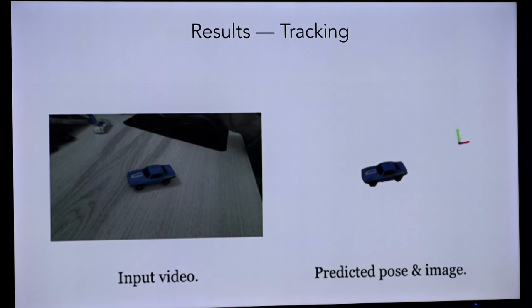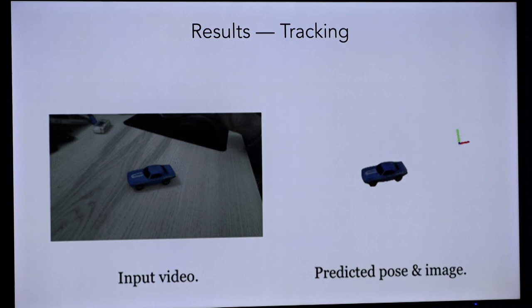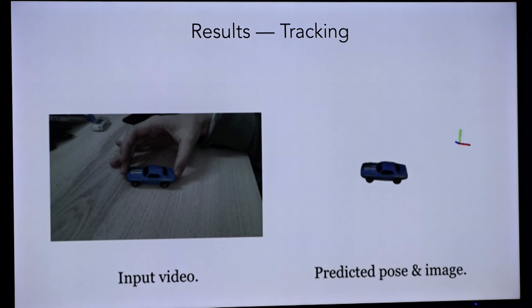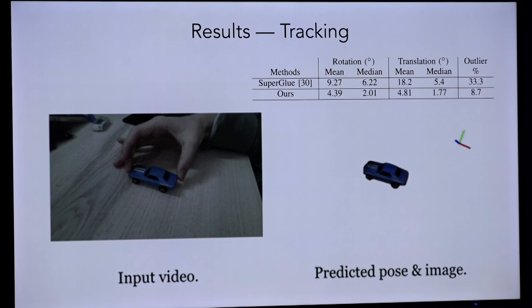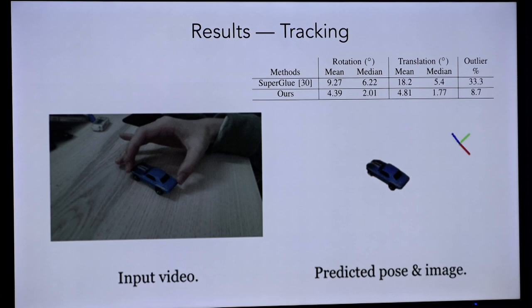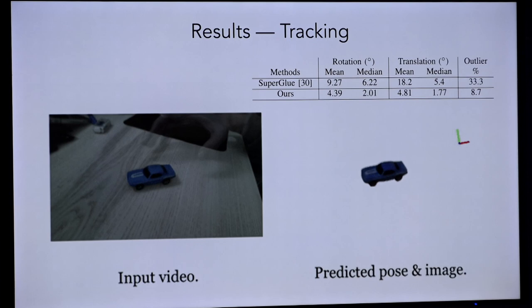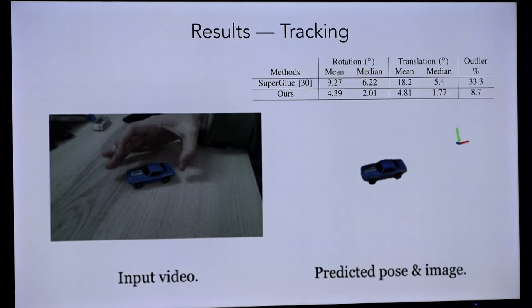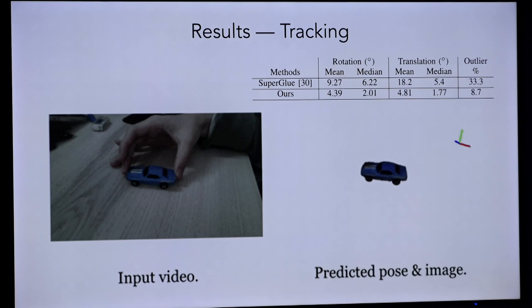Here's a real demo. Yen Chen takes this toy car — he has a NeRF model of it, actually given by just a single photo sent to a system called Pixel NeRF, which infers a NeRF from a single photo. You just need one photo of that car, and the off-the-shelf Pixel NeRF system estimates a full NeRF of the car. Then you infer the pose using iNeRF. As Yen Chen moves the car around, you can see the estimated pose moving fairly accurately. This is actually competitive with state-of-the-art methods on pose estimation — it works better than a method called SuperGlue in this case.